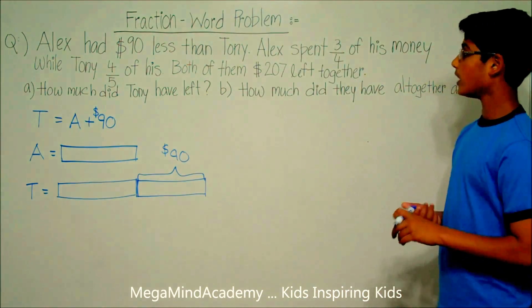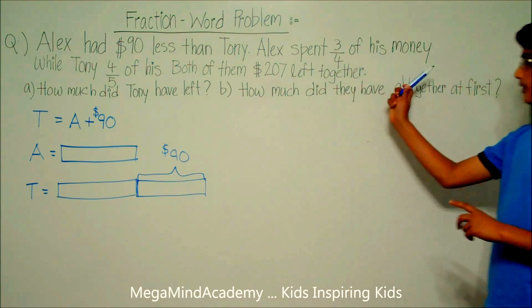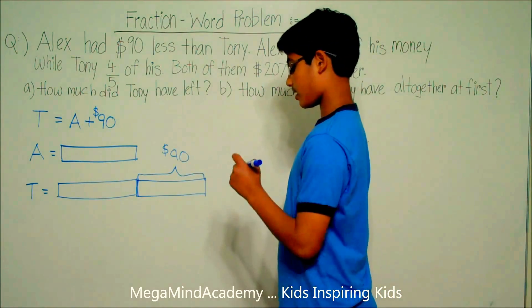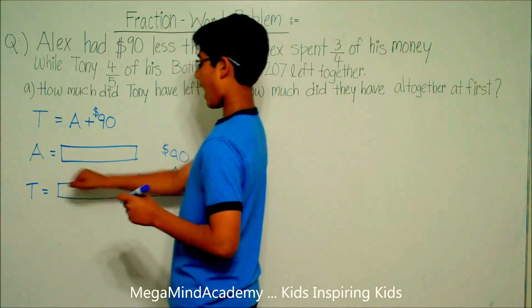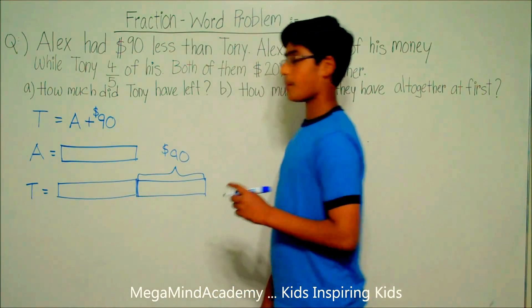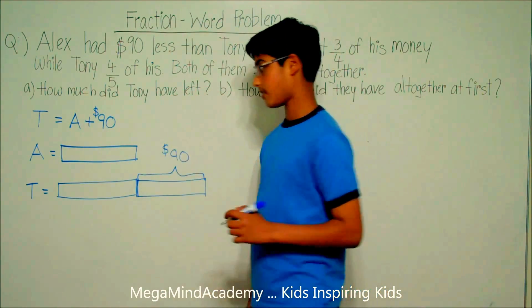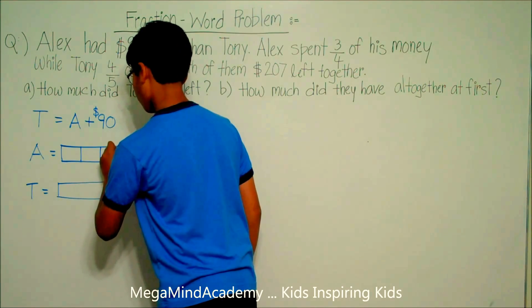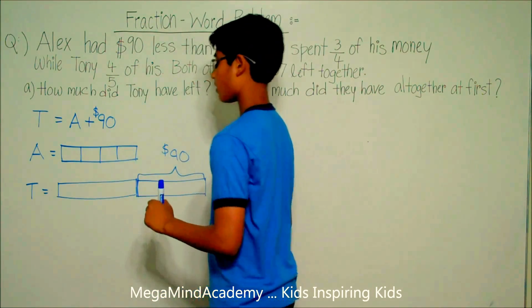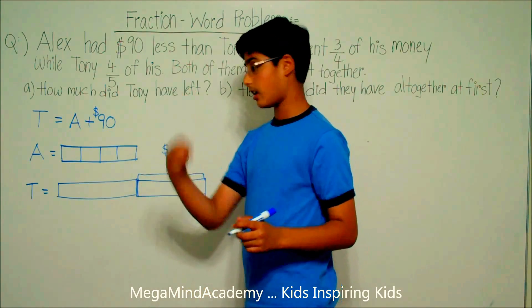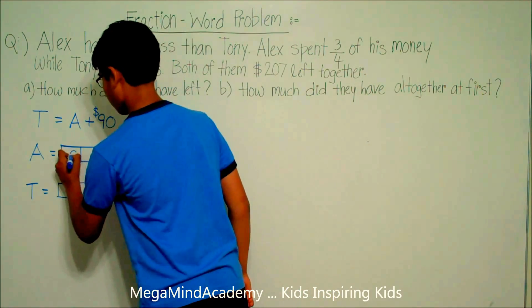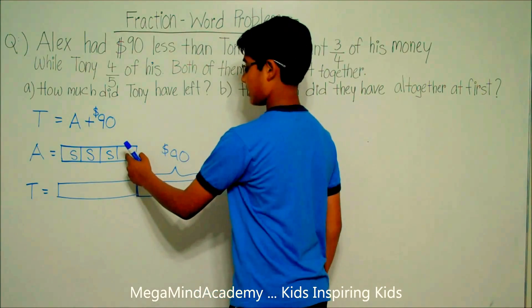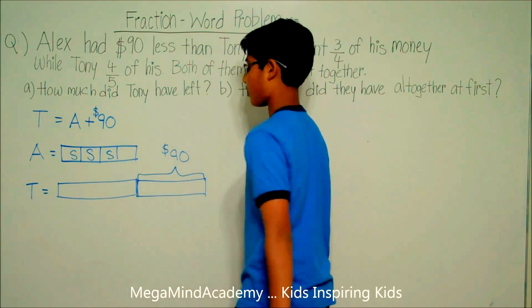We know that Alex spent three-fourths of his money, while Tony spent four-fifths of his. So this means that Alex divided up his money into four pieces — one, two, three, and four — and he spent three of his pieces. So he still has this much of his money left.